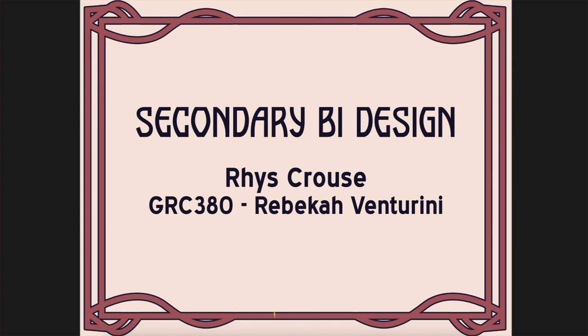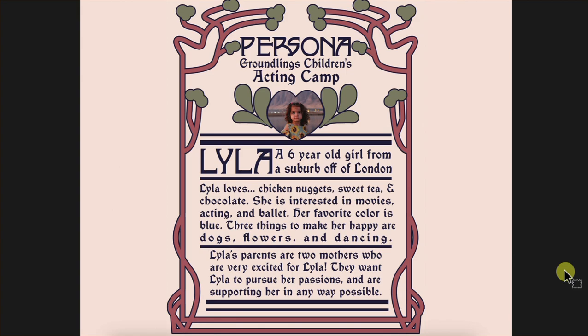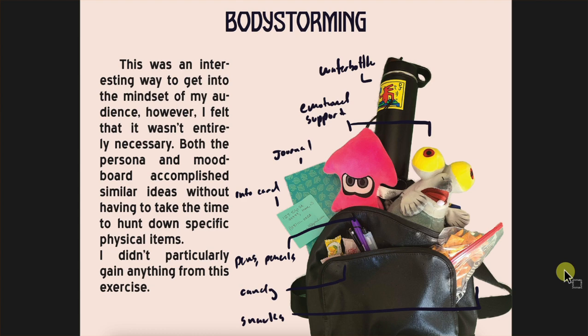Next up is Reese. Good looking first slide. Thank you. Here is your persona of Lila — she's six and she's adorable. The three things that make her happy also make me very happy: she loves dogs, flowers, and dancing, and her moms are very excited to help her pursue her passion. I just love it. This picture made me laugh because of these eyes staring at me. You explained that you didn't really like this exercise much and didn't think it was necessary — thank you for your frankness.